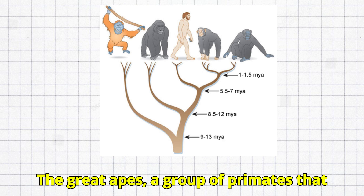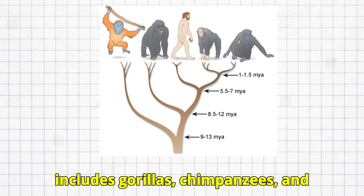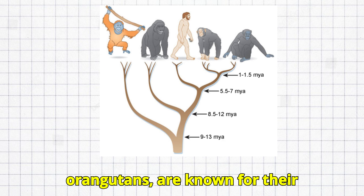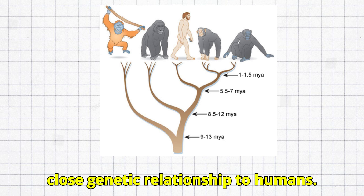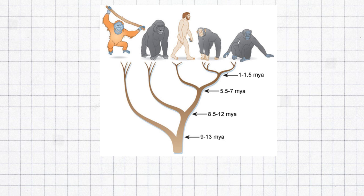The great apes, a group of primates that includes gorillas, chimpanzees, and orangutans, are known for their intelligence, social complexity, and close genetic relationship to humans.